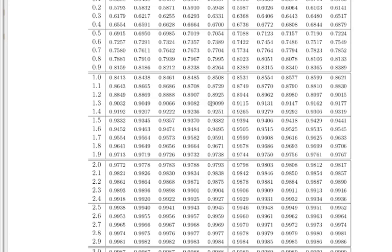I can't find the exact number, but I do find 0.9099 and 0.9115 and my number 0.9107 would be in between those two. So that means my z-score must be in between the two corresponding z-scores.